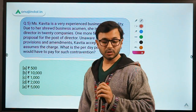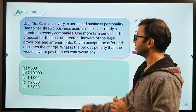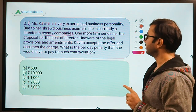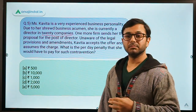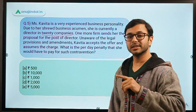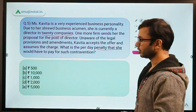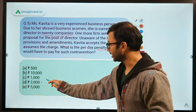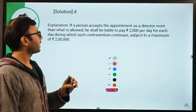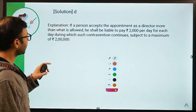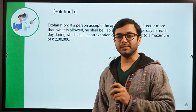Question number five: Miss Kavita is a very experienced business personality and currently a director of 20 companies. One more firm sends the proposal for the post of director. Unaware of the legal provisions and amendments, Kavita accepts the offer — she does not know that she does not qualify to be the director of more than 20 companies. She has assumed a charge which is not legal. What is the per day penalty that she would have to pay for such a contravention? The answer is D — 2,000. If a person accepts appointment as a director beyond what is allowed, he or she will be liable to pay rupees 2,000 per day and the maximum is 2 lakh.